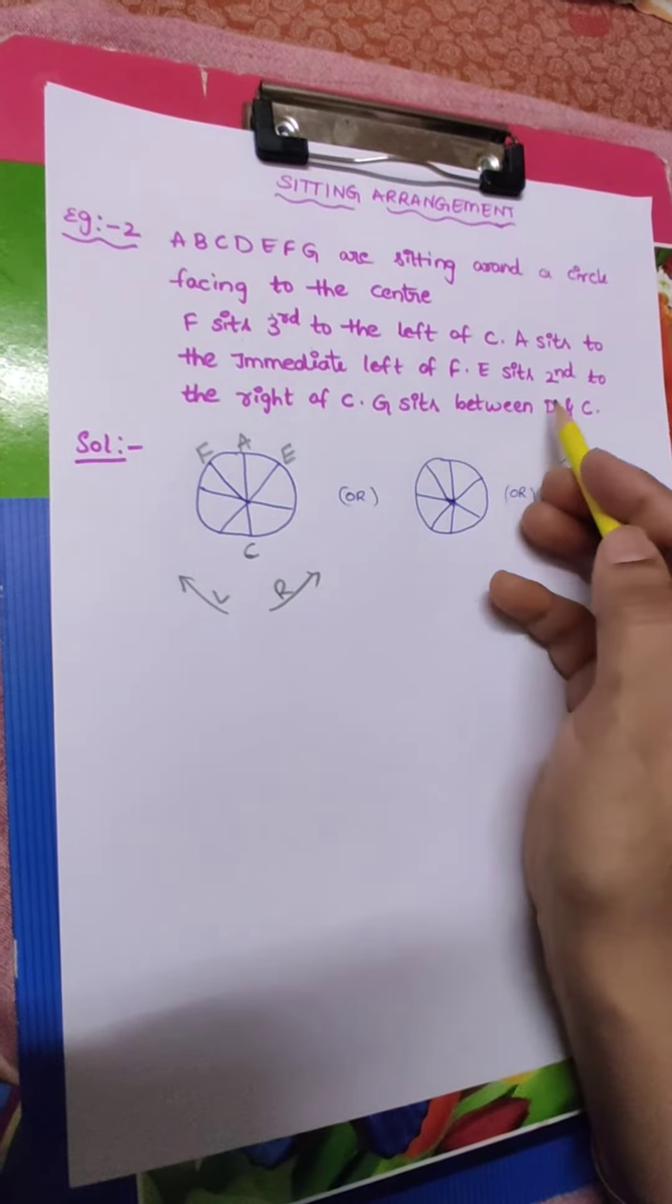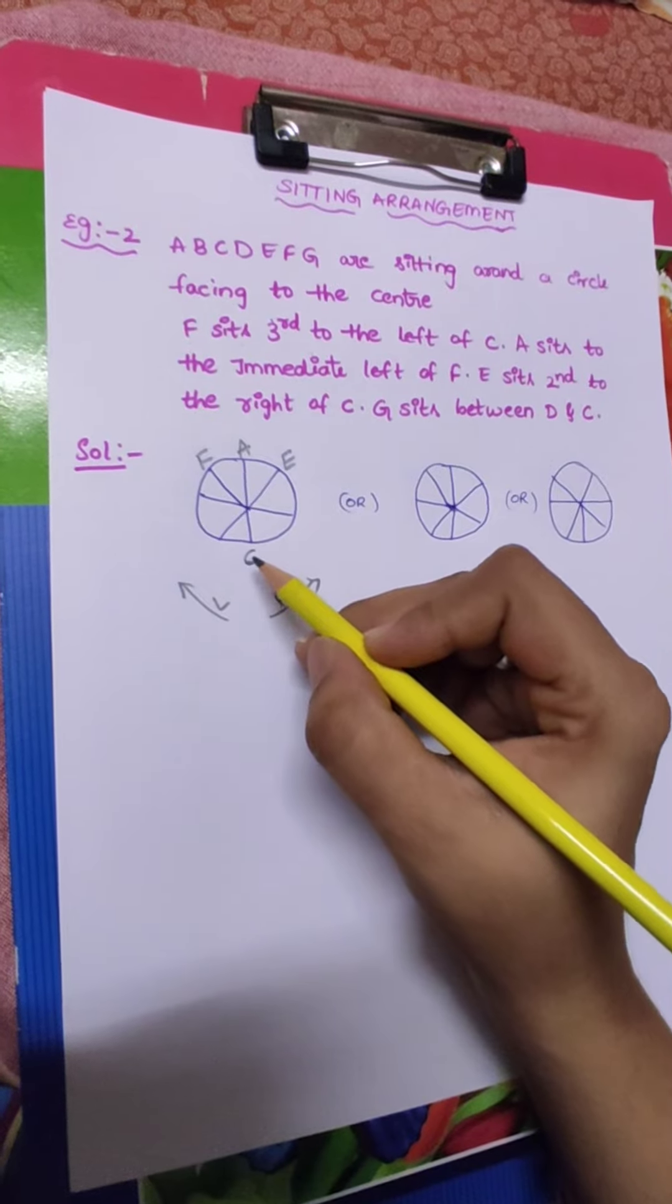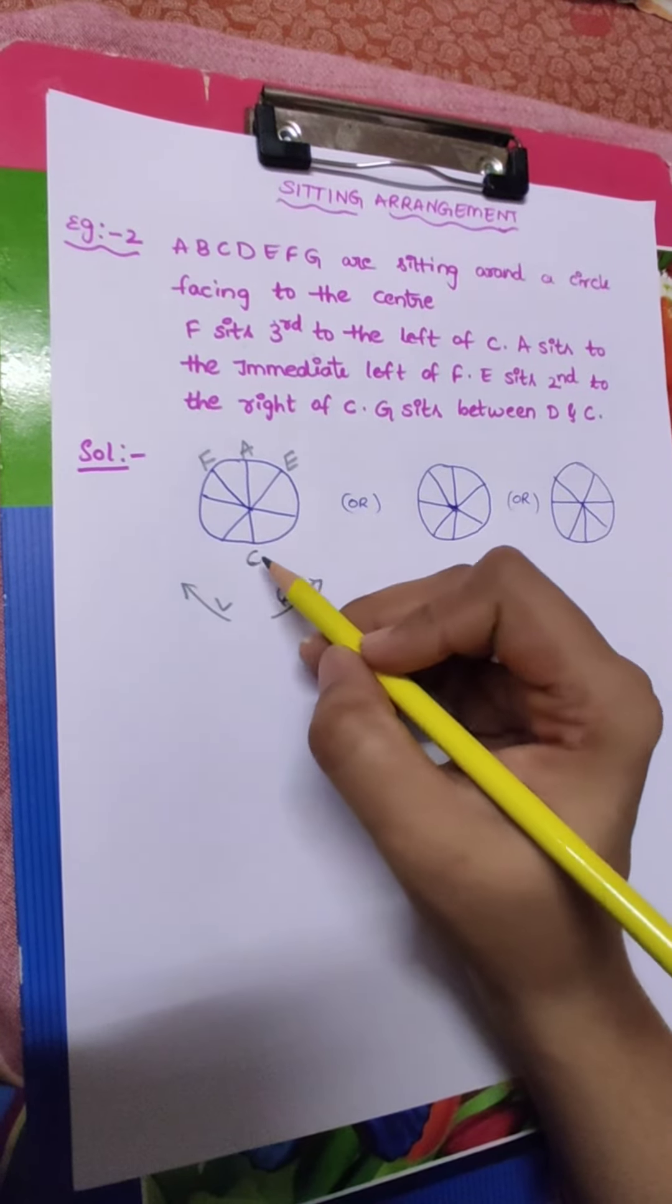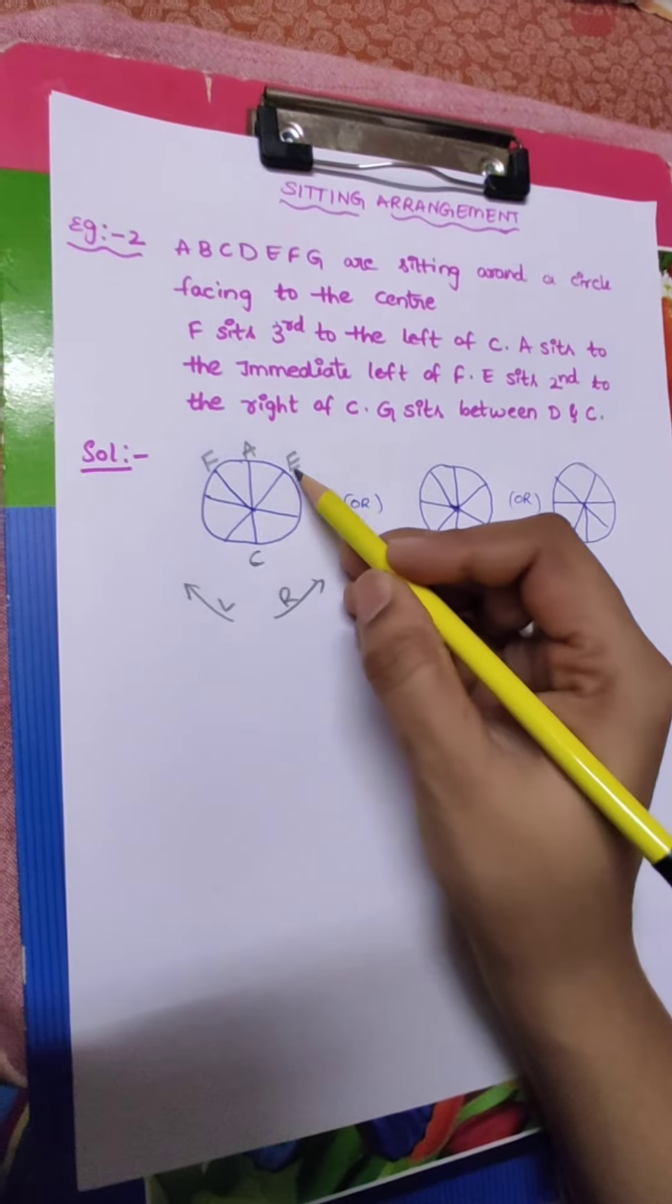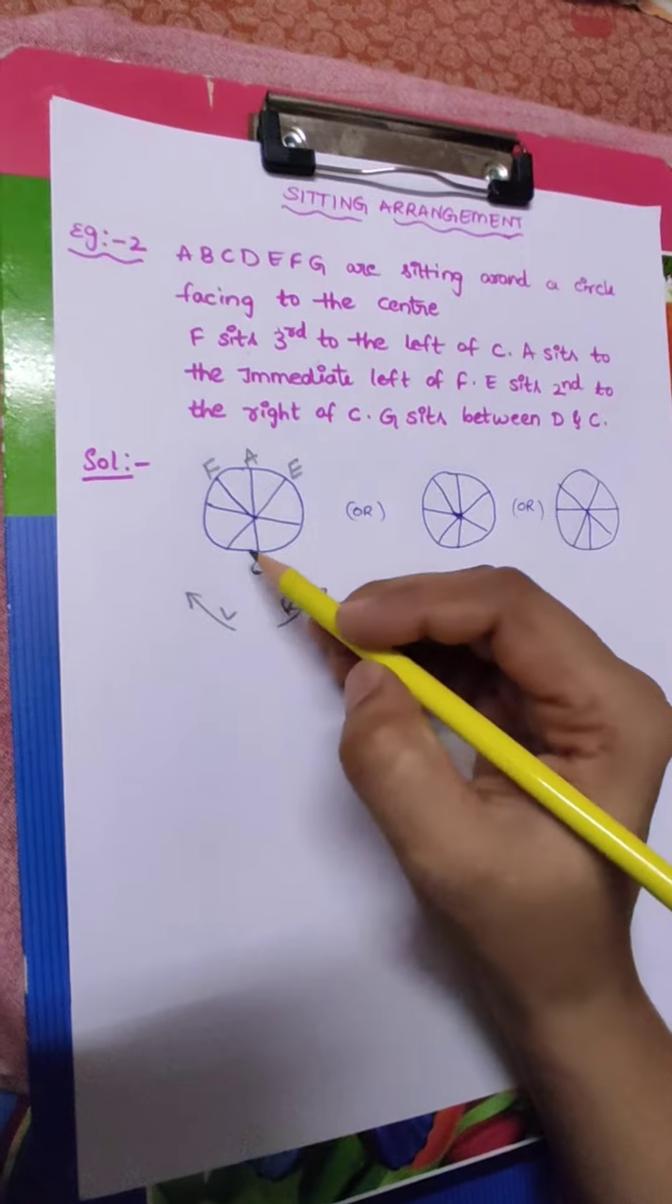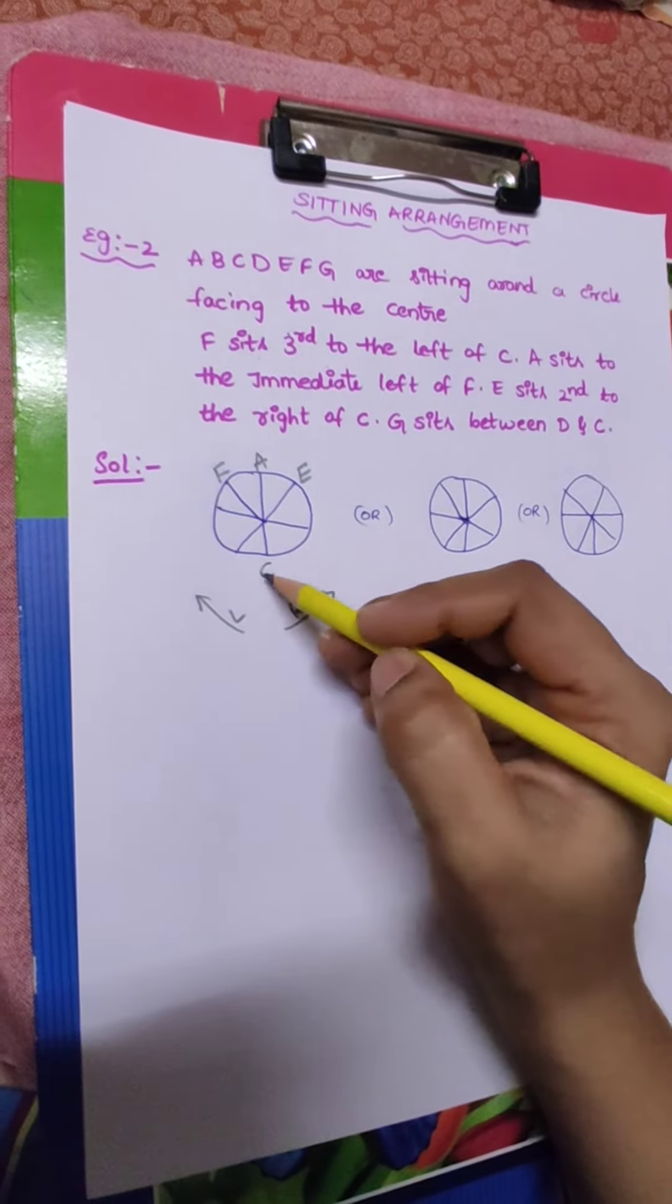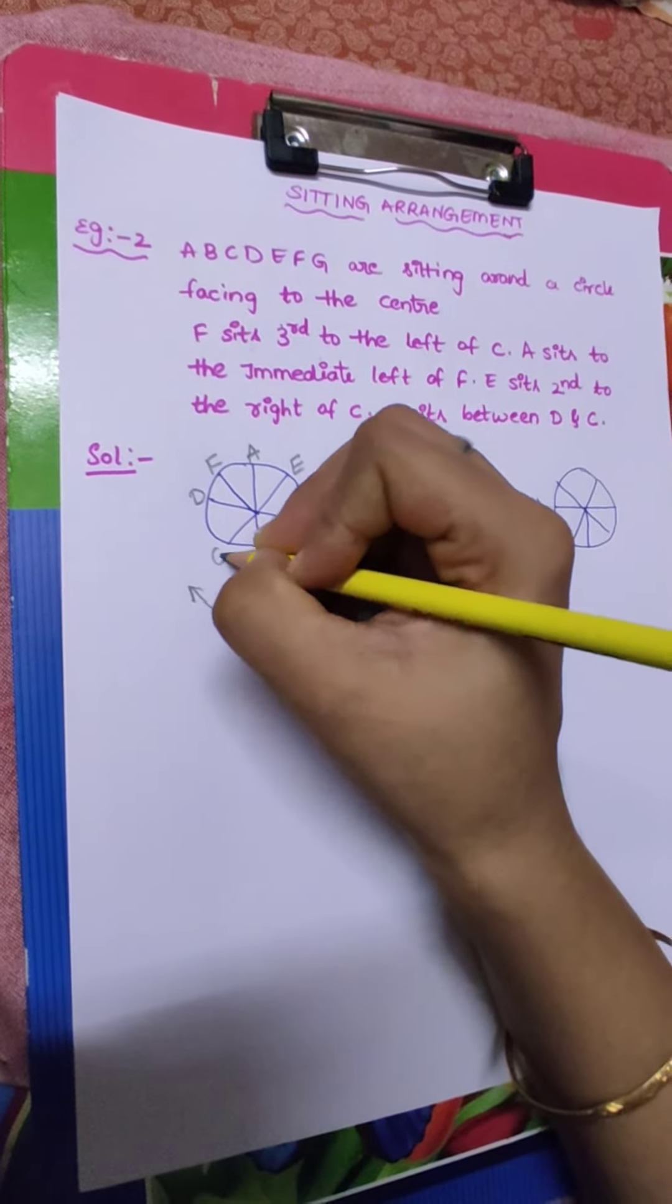G sits between D and C. You already know where C's position is. So in between, G is sitting. In between C and D, C already confirmed. D, can we take it here? No. Why? Because already E's position is confirmed. So which side is empty? C and D. In between, G.